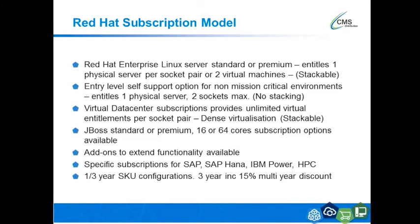A review of the Red Hat subscription model — very important to understand at renewal time. We're focusing on Red Hat Enterprise Linux subscriptions with a bit of JBoss, as this is most likely what your renewal pipeline is made up of. The basic RHEL server standard or premium subscription entitles a physical server — a socket pair — or provides two virtual machines, and this subscription is stackable. So if a customer has four CPUs, they just need to buy two. There's also an entry-level self-support option for customers that don't require technical support, entitling a physical server with two sockets maximum — non-stackable.